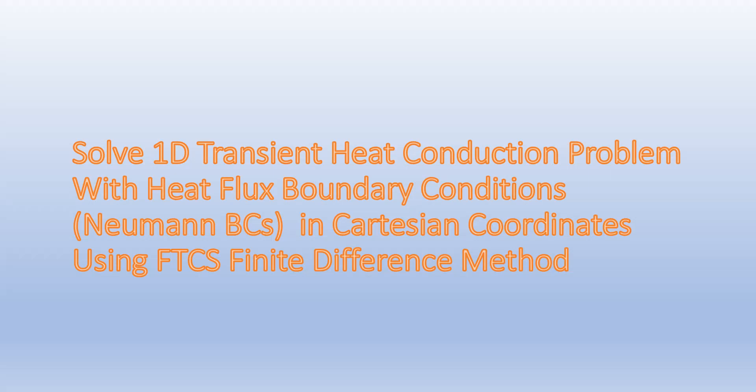Today we are going to solve a 1D transient heat conduction problem with heat flux boundary conditions, also known as Neumann boundary conditions, in Cartesian coordinates using FTCS — that is, forward time centered space finite difference method.